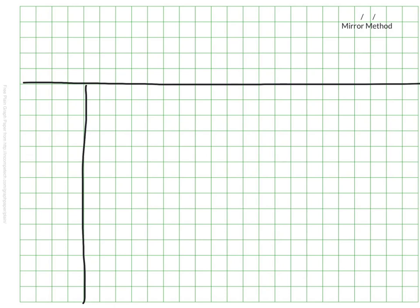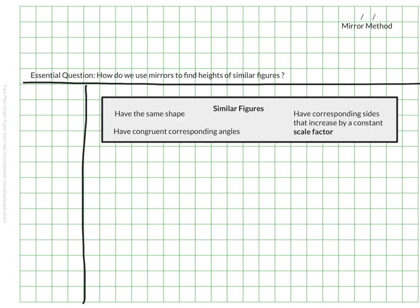This video is going to cover the topic of the mirror method. Be sure the date and topic are at the top of your page. The essential question for this video will be, how do you use mirrors to find the heights of similar figures? Before we talk about our mirrors, we first need to remember the term similar figures. Remember that similar figures have the same shape, have congruent corresponding angles, and the corresponding sides increase by a constant scale factor.